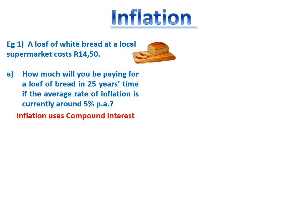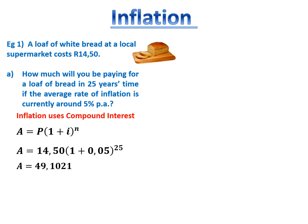If it's an inflation question, just by mentioning the word inflation, you need to know that you should be using compound interest. So we're going to start with our compound interest formula. Currently the loaf of bread is R14.50 and the rate of inflation is 5% per annum — remember to substitute it in as a decimal of 0.05. In 25 years time, the exponent is 25, and it's going to cost R49.10 — that's 49 rand and 10 cents for a loaf of bread.